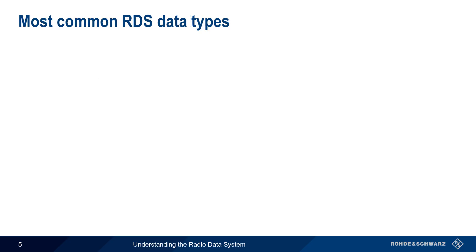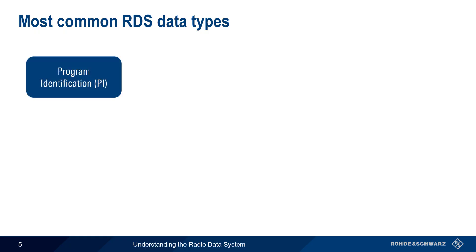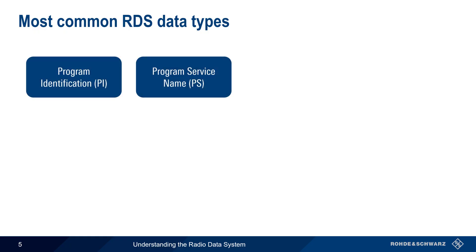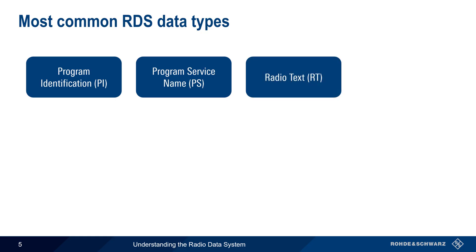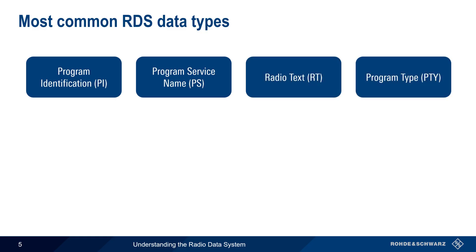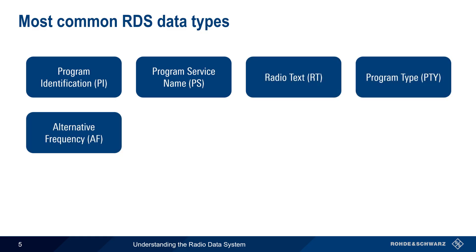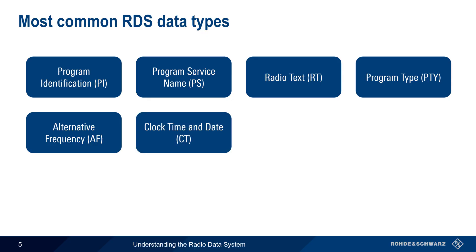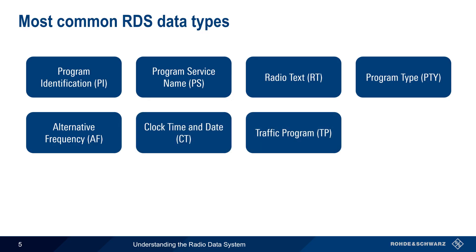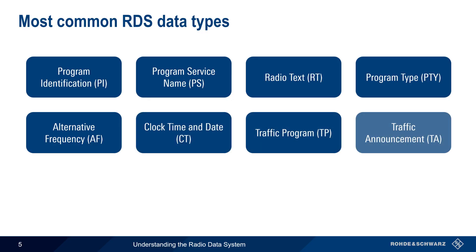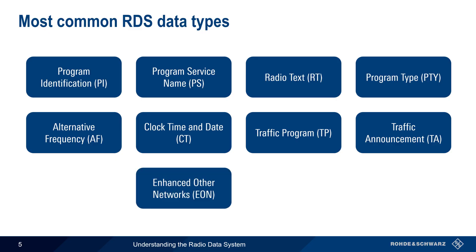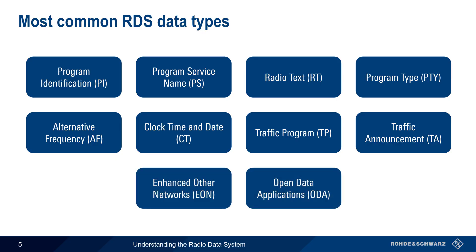The 10 most common RDS data types are Program Identification, Program Service Name, Radio Text, Program Type Name, Alternative Frequency, Clock Time and Date, Traffic Program and Traffic Announcement, Enhanced Other Networks, and Open Data Applications.